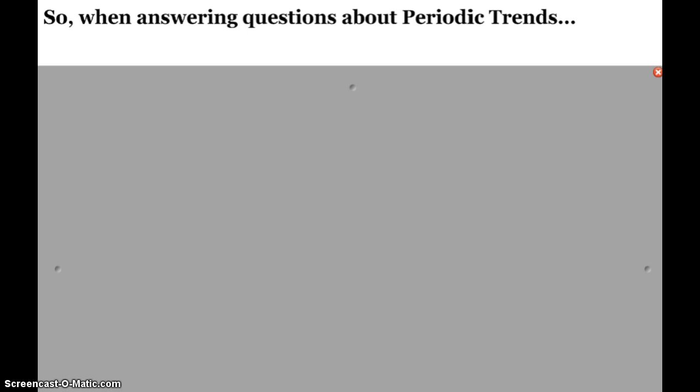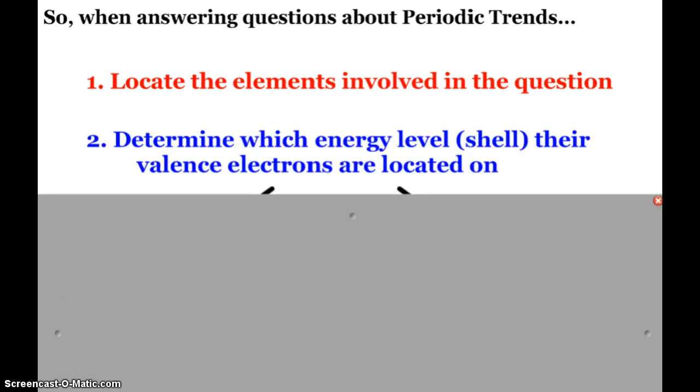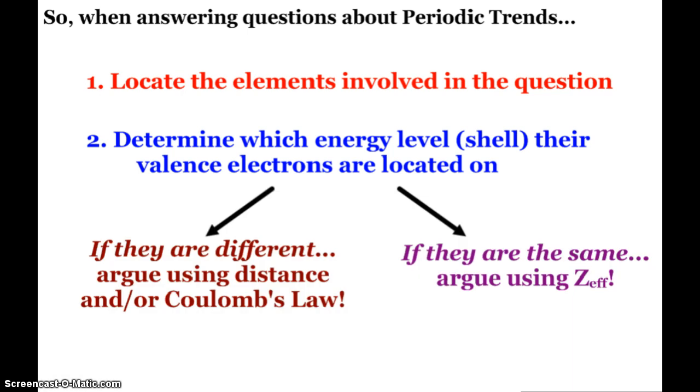If we are going to answer questions about periodic trends, the first thing I want you to do is locate the elements involved in the question. Find them on the periodic table. What you want to figure out is which energy level, which energy shell, are their valence electrons located on? Sometimes we might need to talk about the subshell for a specific question, but most things can be handled by determining which energy level the valence electrons are located on. If they're on the same valence shell, then we can argue using our good buddy Zeff. If they are different, then we're going to talk more about the distance that electron is from the nucleus and bring in Coulomb's Law when necessary.